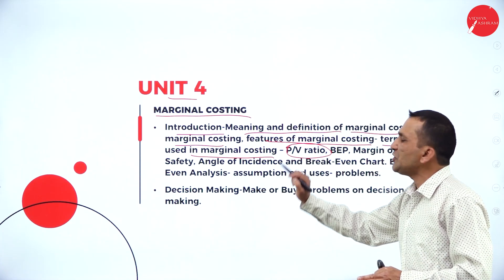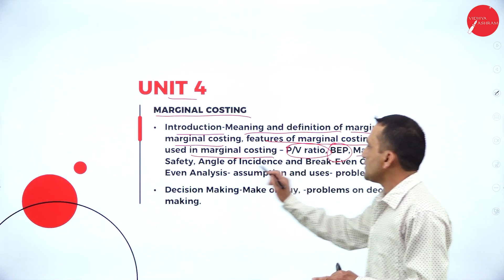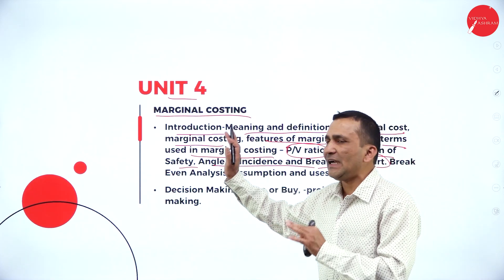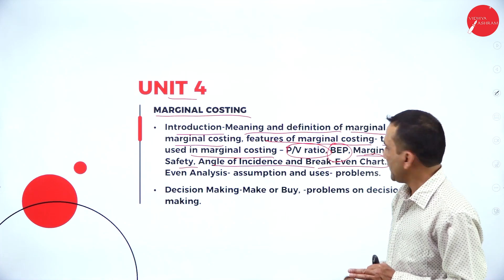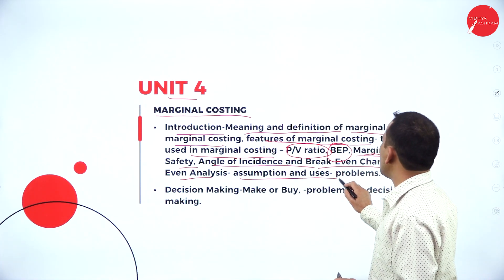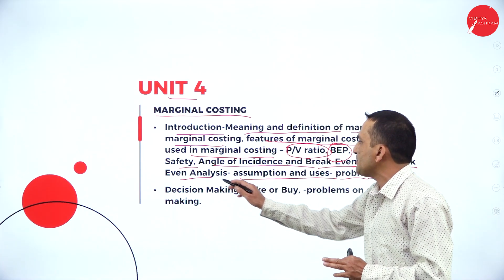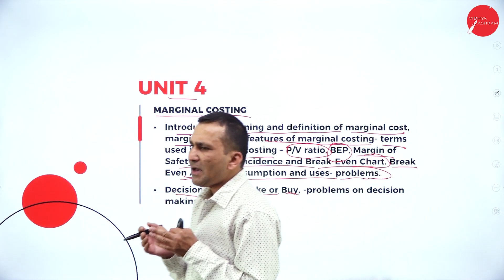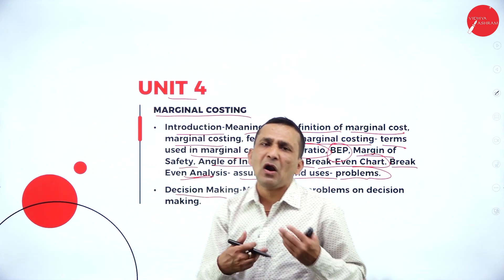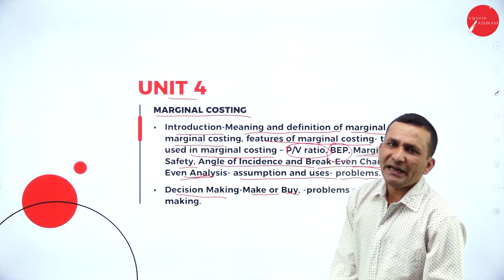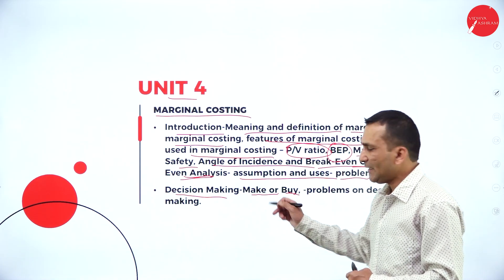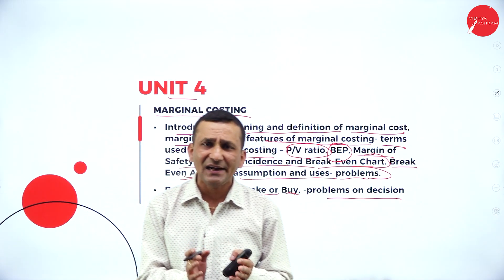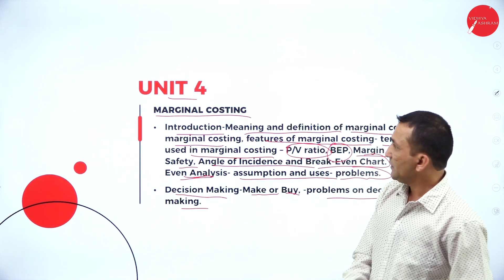Using the profit-volume ratio (PV ratio), breakeven point, margin of safety, angle of incidence, and the breakeven chart, you'll get more clarity when we cover the fourth unit. Breakeven analysis, its assumptions, uses, and problems will be discussed. Decision making — particularly make-or-buy decisions — is also covered. Any businessman preparing to produce a product must decide whether to make or buy, which means getting from outside with the intention for resale. The problems are problem-based since management accounting stands on problem solving.